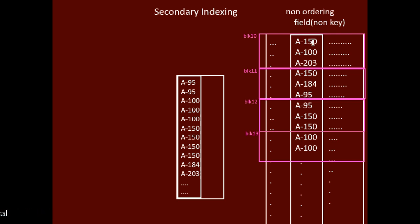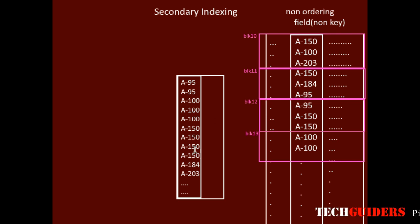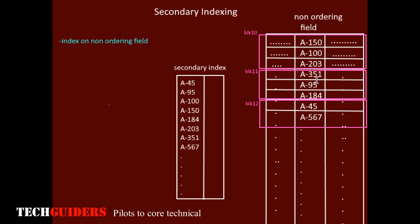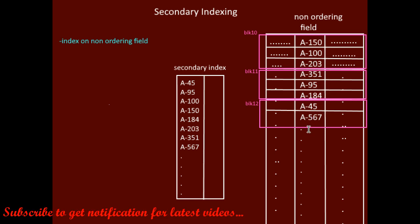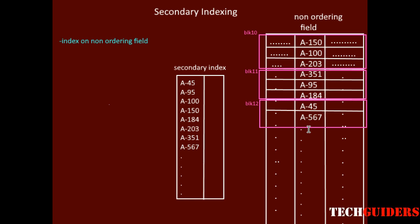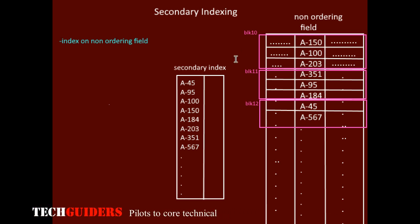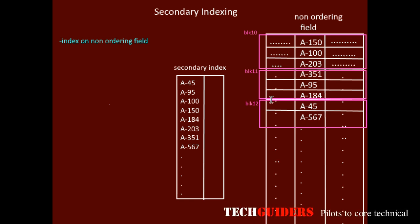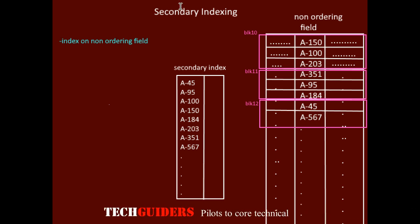Every data record will have a corresponding entry in the index. Because the data file is unordered according to this field, the block anchor method used in primary indexing won't work here. Thus every data file record will have a corresponding entry in the index, so this type of indexing is not sparse.